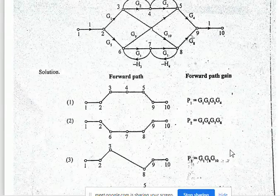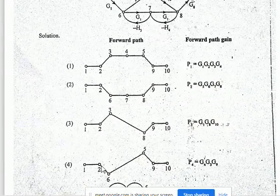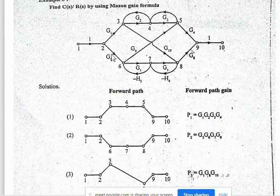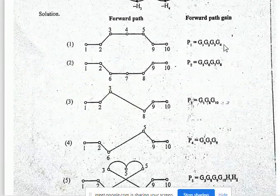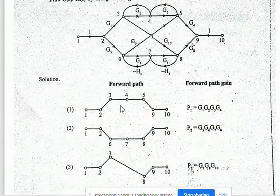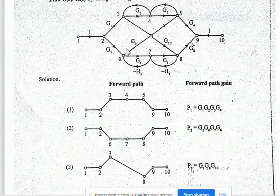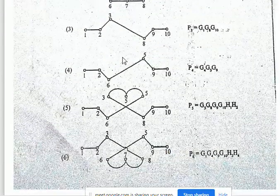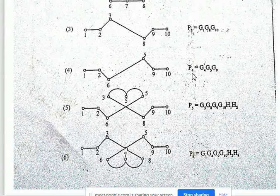The fourth forward path is 1 to 2, 2 to 6, 6 to 5, 5 to 9, and 9 to 10. The forward path gain P4 is equal to G5 × G9 × G4, that is 1 × G5 × G9 × G4 × 1. This is represented as P4.